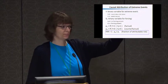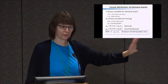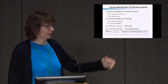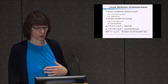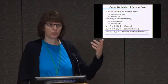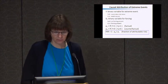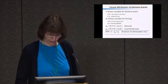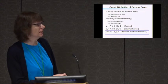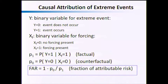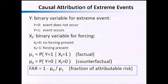Say y is a binary variable for an extreme event — for instance a heat wave, where I set a temperature threshold. The variable is zero if the event doesn't occur and one if it does. I also have a forcing variable, say the amount of CO2 in the atmosphere, which is binary: zero if no forcing is present, one if forcing is present. Classic analysis defines the factual probability p1 — the probability that the event happens given the forcing is present — and the counterfactual p0 — whether the event would not have happened if the forcing wasn't present. Classic analysis gives me the FAR value: one minus p0 over p1, the fraction of attributable risk, which is commonly used in climate science.